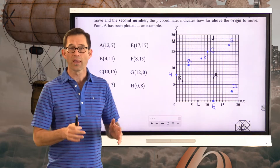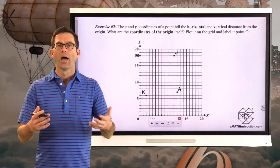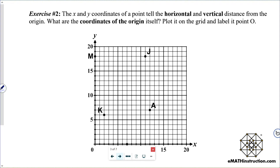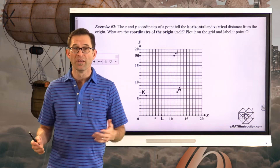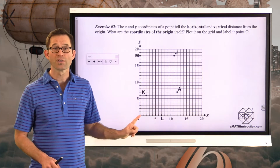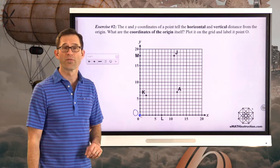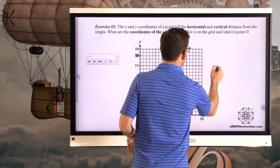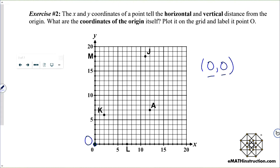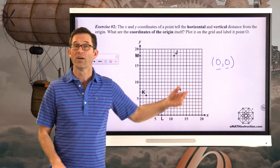It's absolutely critical to be able to take a point whose coordinates are given and plot it on the coordinate grid. Exercise number two asks: the x and y coordinates of a point tell the horizontal and vertical distance from the origin — what are the coordinates of the origin itself? The origin is where the x and y axes cross each other. Since the origin is the starting point itself, its coordinates are 0 comma 0, meaning zero distance to the right and zero distance up.